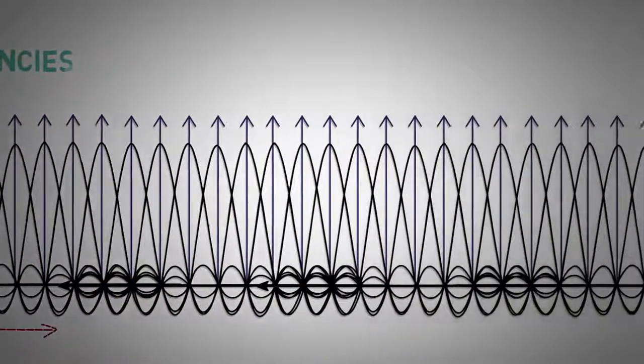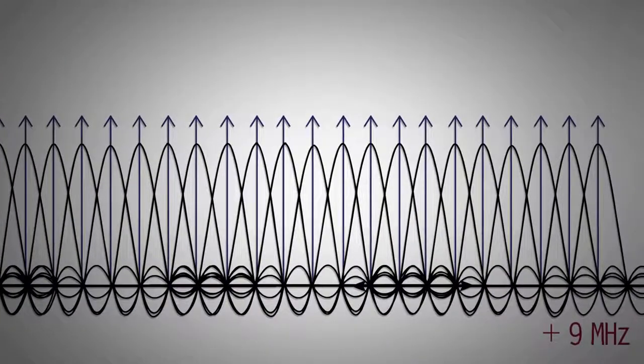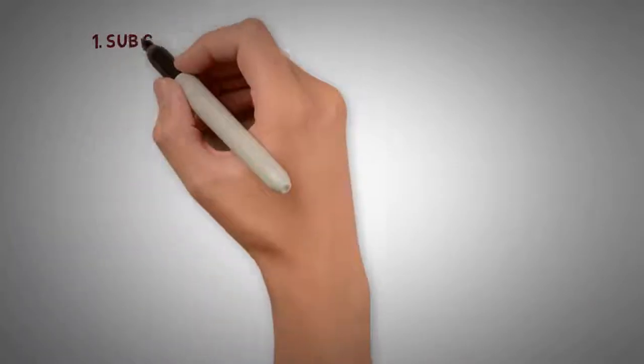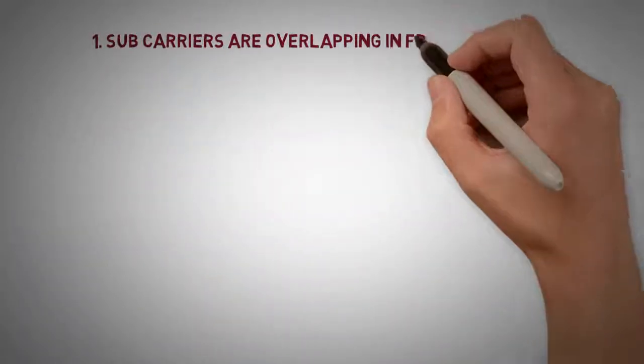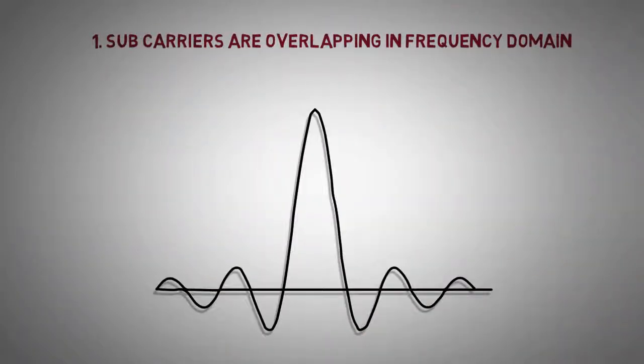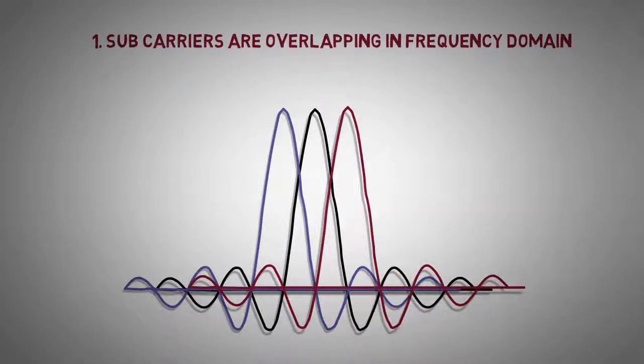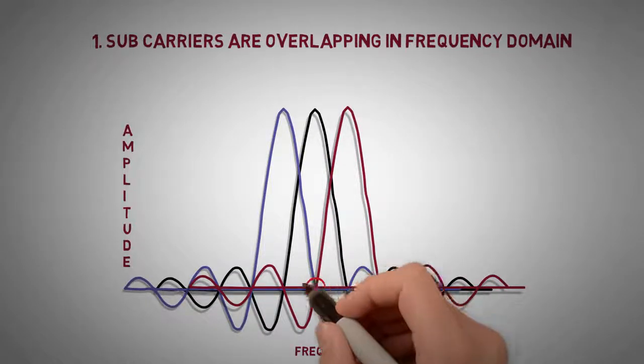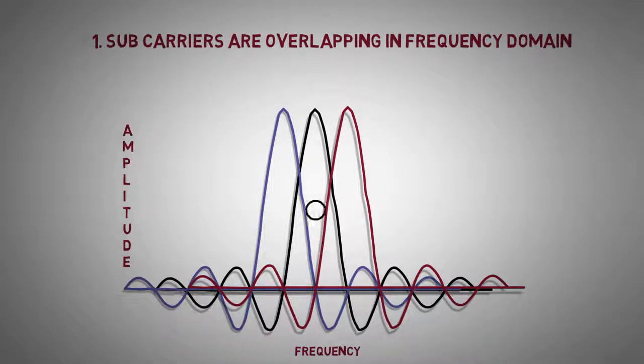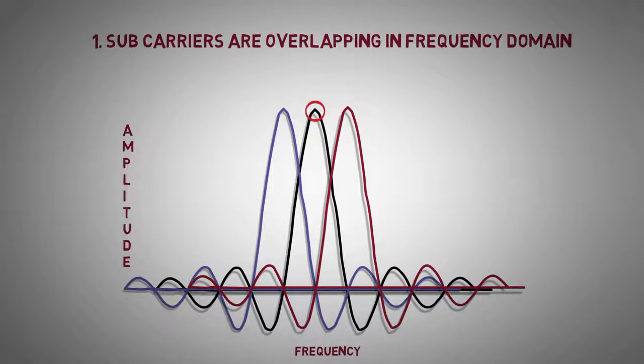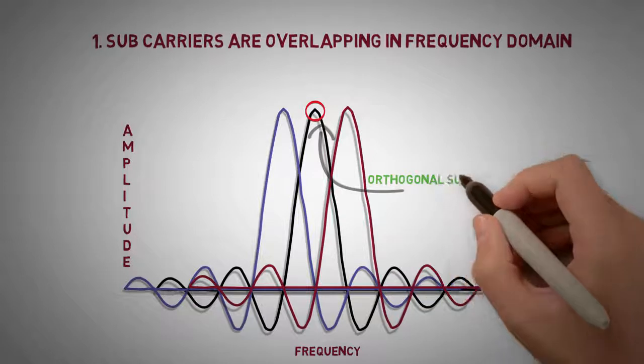Basically we are having 1200 such sync waves. There are two points to be noted here. Firstly, the sub-carriers are overlapping in frequency domain. As we can see, the sub-carriers are placed in a manner that all the other sub-carriers have a zero component at the peak of one sub-carrier. Such sub-carriers are called orthogonal.